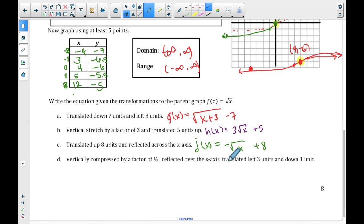Okay, reflect across the x-axis is a negative. Up 8 units is a plus 8. Last one, vertically compressed by a factor of 1 half, reflected over the x-axis, translated left and down 1. That's a lot. See what you'd come up with.